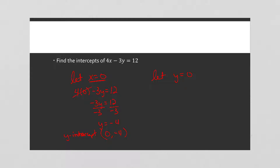Now let y equal 0. Go back to the original equation: 4x − 3(0) = 12. That simplifies to 4x = 12, divide by 4, so x = 3. The x-intercept ordered pair is (3, 0).